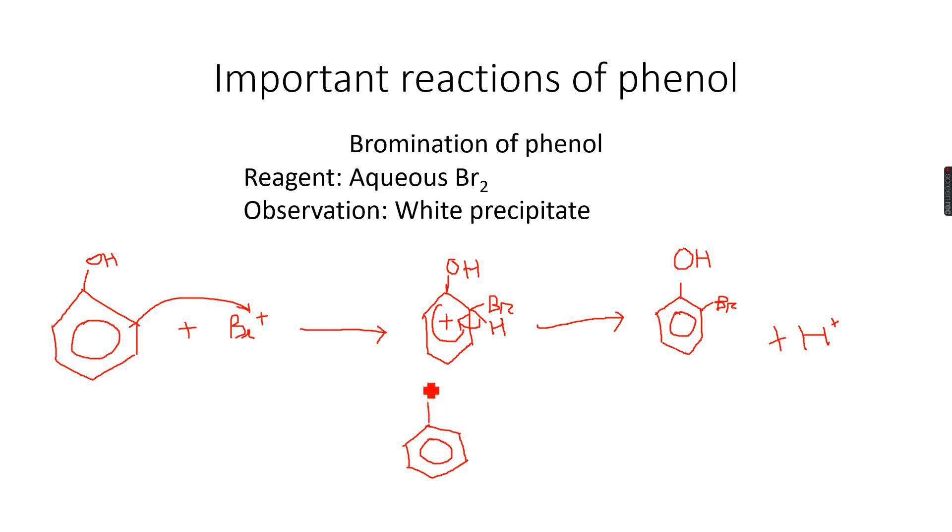So we get OH, and remember the OH group activates the 2, 4, and 6 positions. So we get 2,4,6-tribromophenol. The reaction is so rapid that we often get this molecule, and this is seen as a white precipitate.